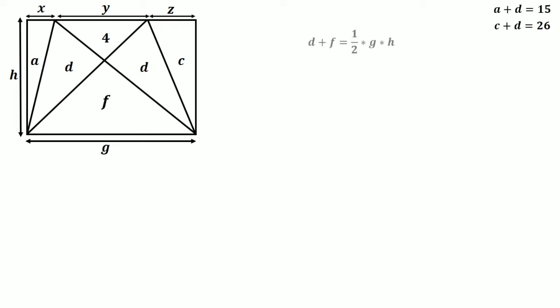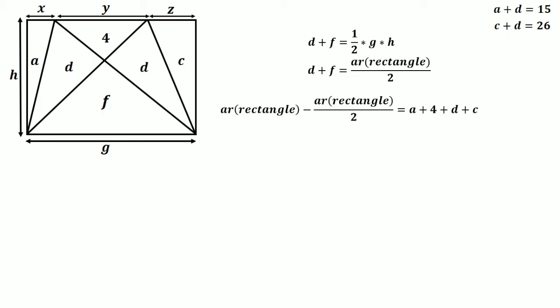The area of region d plus f equals one-half times base g times altitude h. Since g times h is the area of the rectangle, d plus f equals the area of the rectangle divided by 2. Now looking at the remaining region in the rectangle: area of rectangle minus half of area of rectangle equals a plus 4 plus 4 plus d plus c. Equating both expressions, d plus f equals a plus 4 plus d plus c.